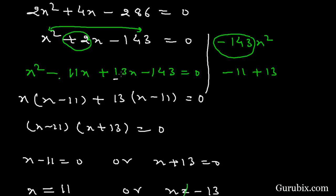We split it as minus 11x and positive 13x because minus 11 times positive 13 equals negative 143. We have taken x common from the first two terms, then we have x into x minus 11.